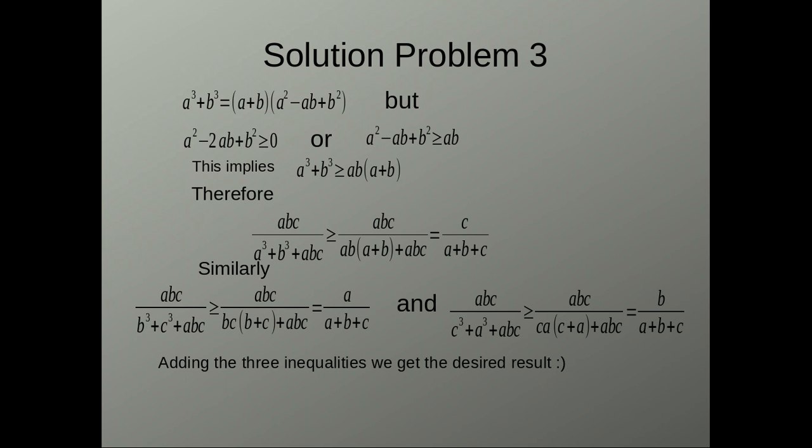This is greater than or equal to AB by ABC because the denominator decreases, so the number increases. So, this is equal to C by A plus B plus C.